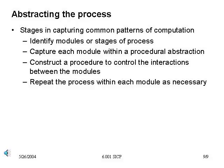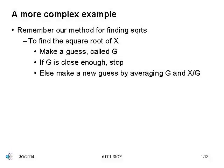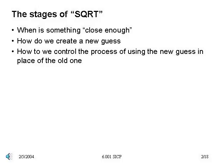Let's step away from the specifics and talk about the process we just used. In essence, we did several things: we identified modules as part of the computational process which we could usefully isolate; we captured each of those within their own procedural abstraction; and we created a procedure to control the interactions between the individual modules. We could apply this process within each of the modules in a recursive fashion. Our goal now is to see how we can use this general approach to capture computational processes inside of procedures — specifically, let's look at describing the process of finding square roots from the first lecture.